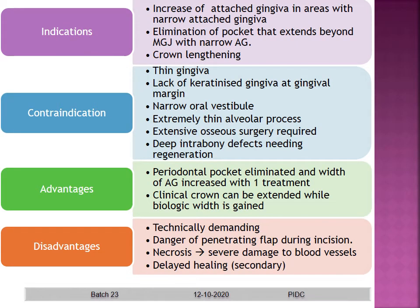Indications for apically positioned flap: increase of attached gingiva in areas with narrow attached gingival sites, examination of pockets extending beyond the mucogingival junction with narrow attached gingiva, and crown lengthening. Strictly contraindicated in: thin gingival areas, lack of keratinized gingiva, narrow oral vestibule, extremely thin alveolar process, extensive osseous surgery required, deep intrabony defects needing regeneration, and periodontal pocket elimination requiring width of attached gingiva increase with one treatment. Disadvantages: technically demanding, danger of penetrating the flap during incision, necrosis due to damage to blood vessels, and delayed healing.